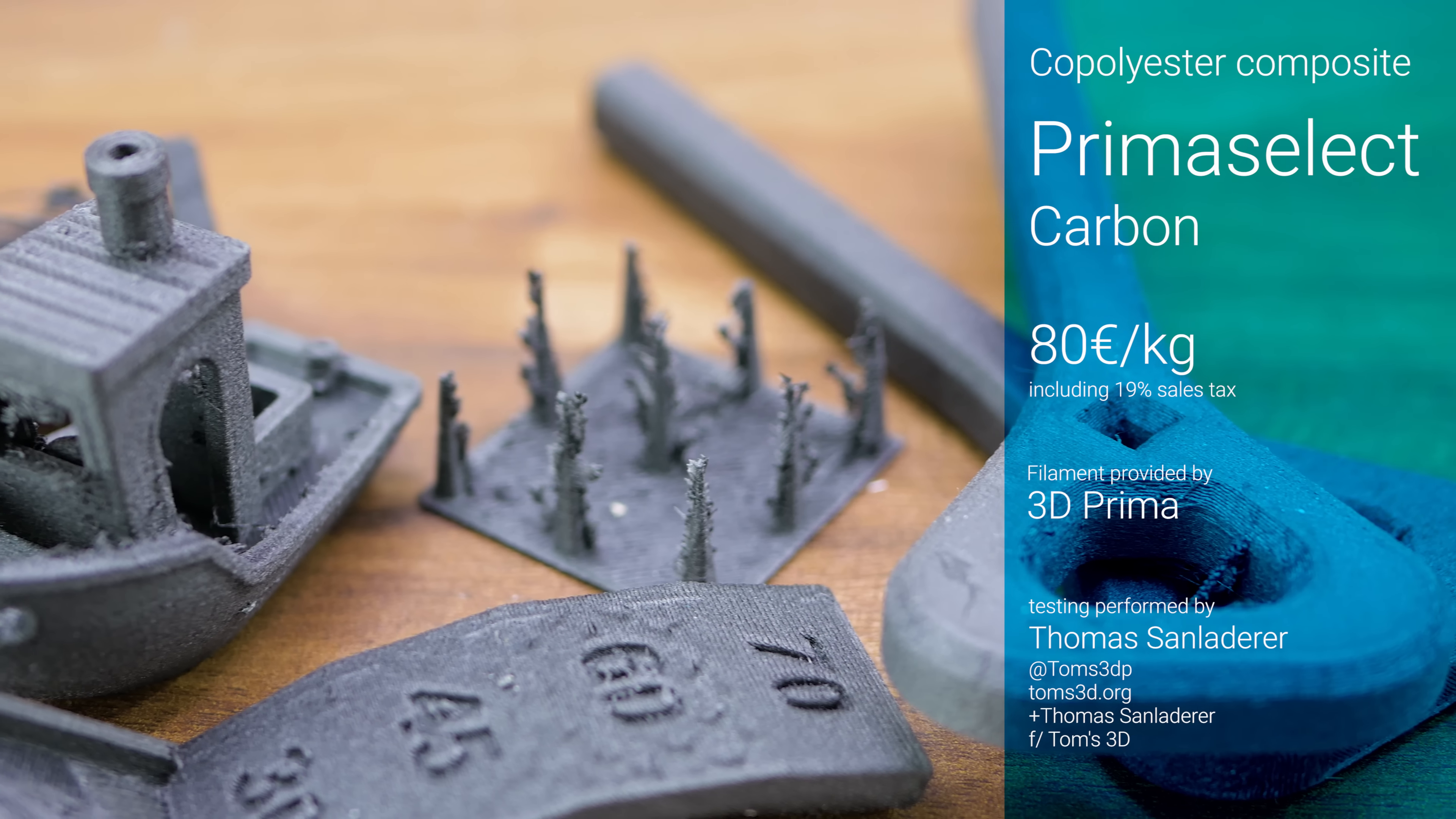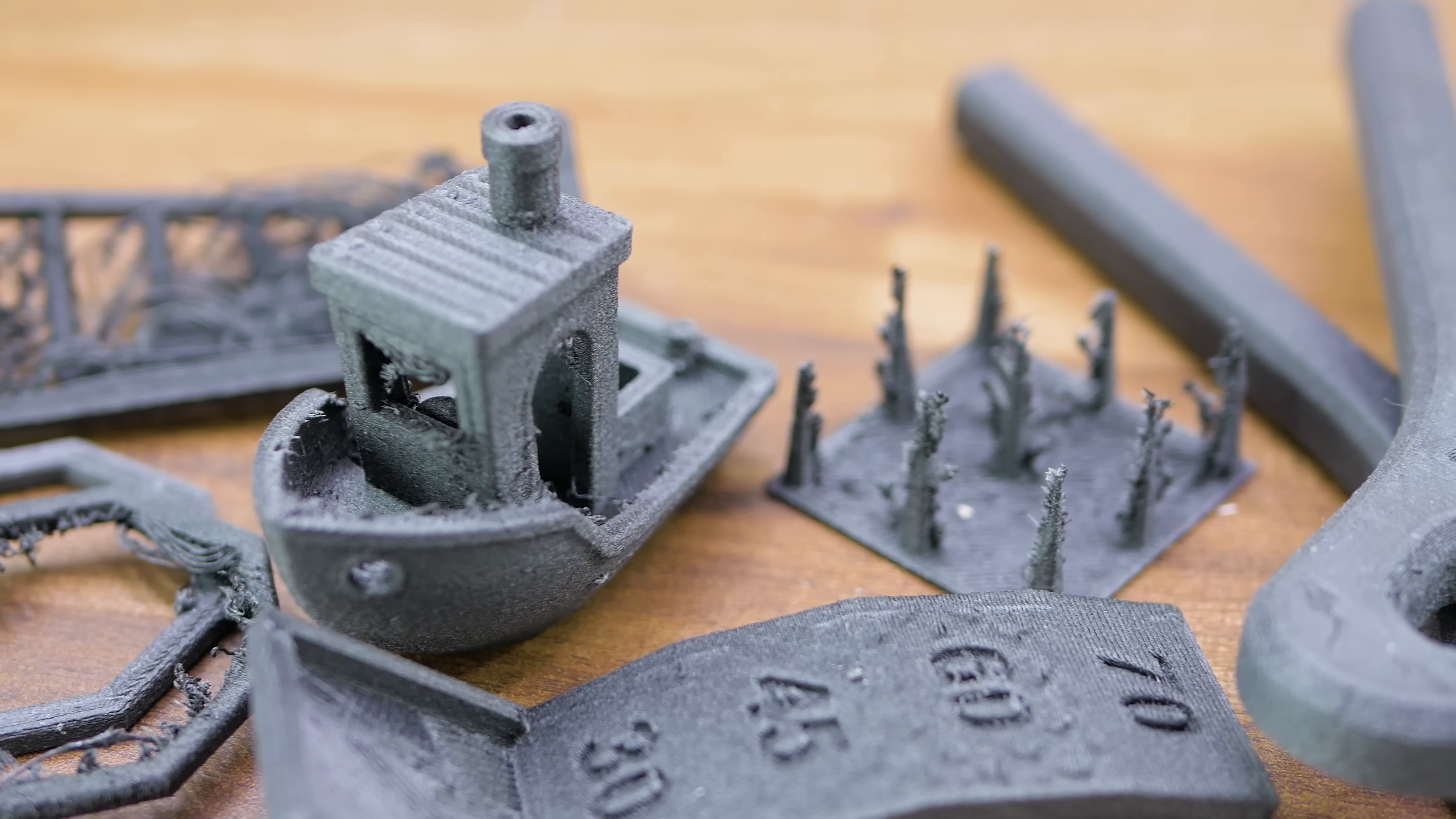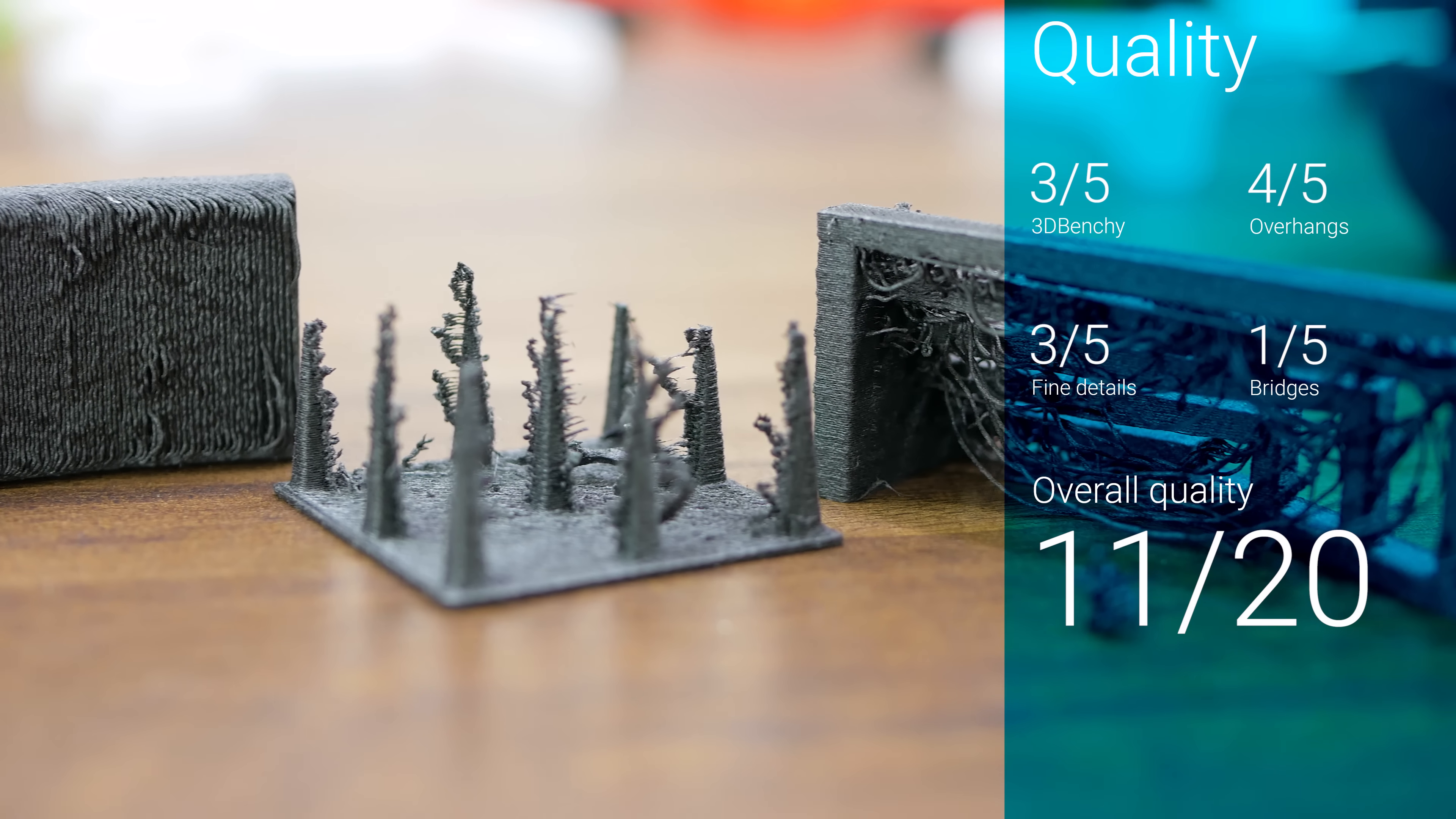Compared to other carbon-filled filaments, this one seems to have longer or simply more fibers. The prints come out very rough, almost with a sandpaper-like finish, and the properties we typically see from filled filaments are fortified, such as the tendency to ooze and poor performance with bridges.